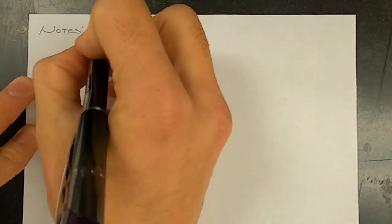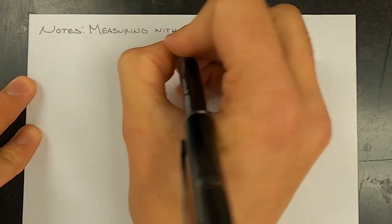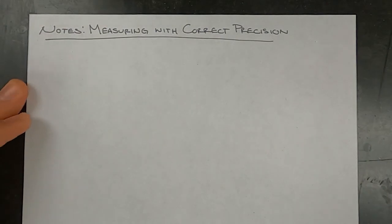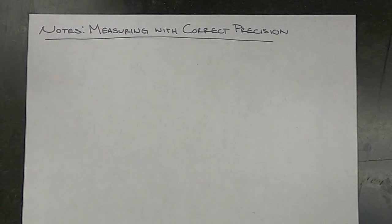First we're going to start off by looking at the concepts behind how to measure correctly, and then we'll look at a few examples. Before we move on to actually measuring, I'm going to do what's hopefully a quick review about place values.